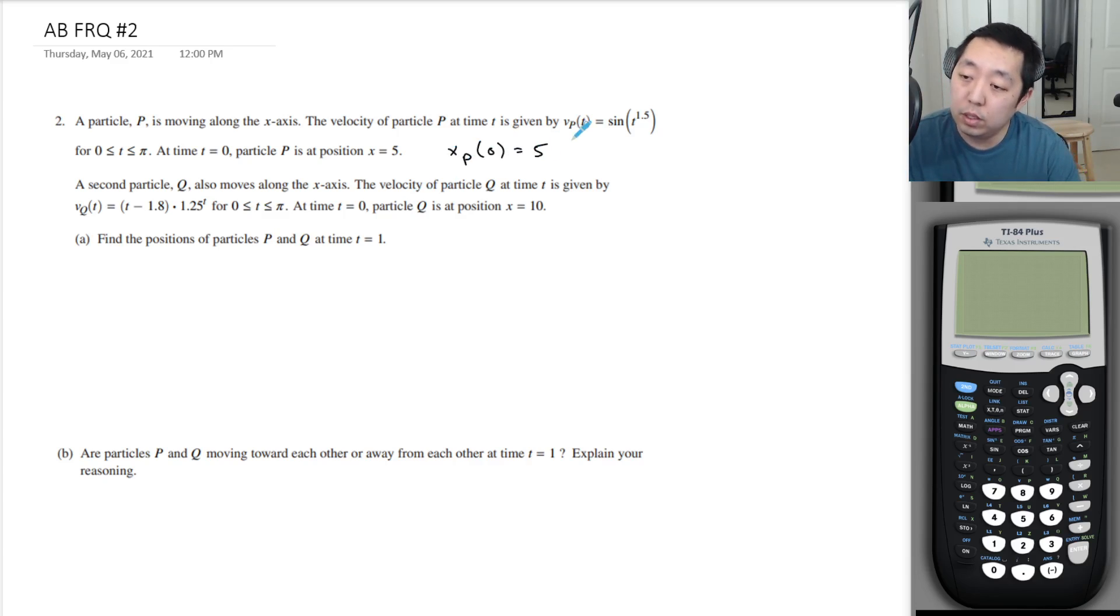A second particle Q also moves along the x-axis. The velocity of particle Q at time t is given by the equation. At time t equals 0, the position is 10, so xQ(0) = 10.